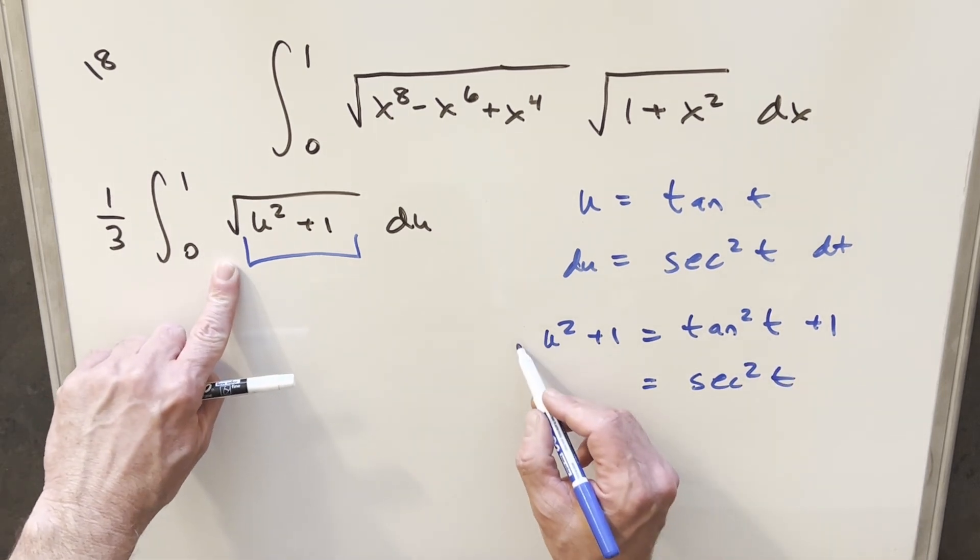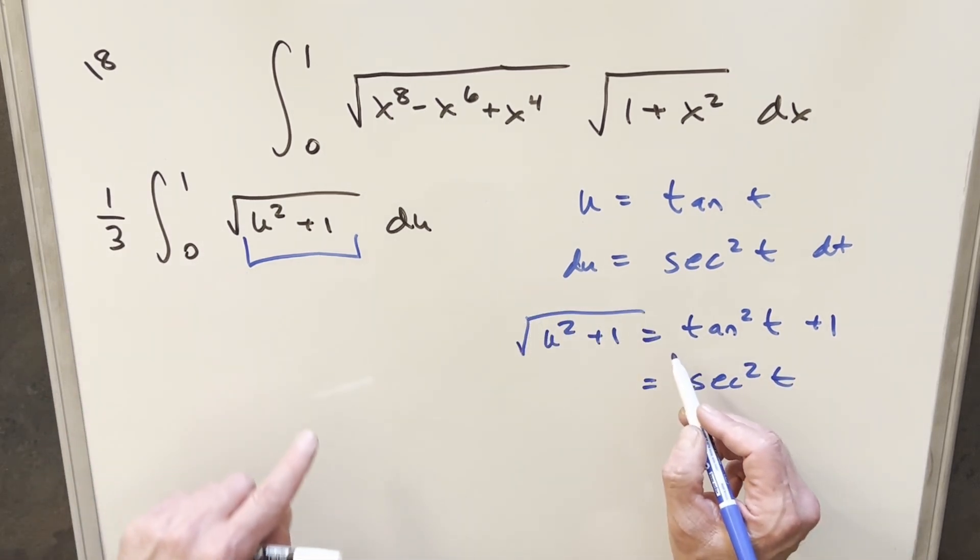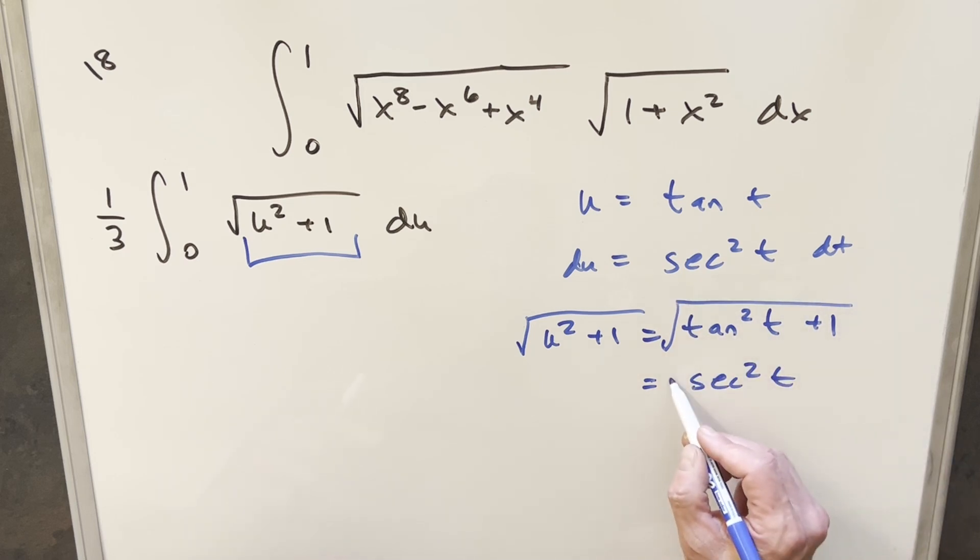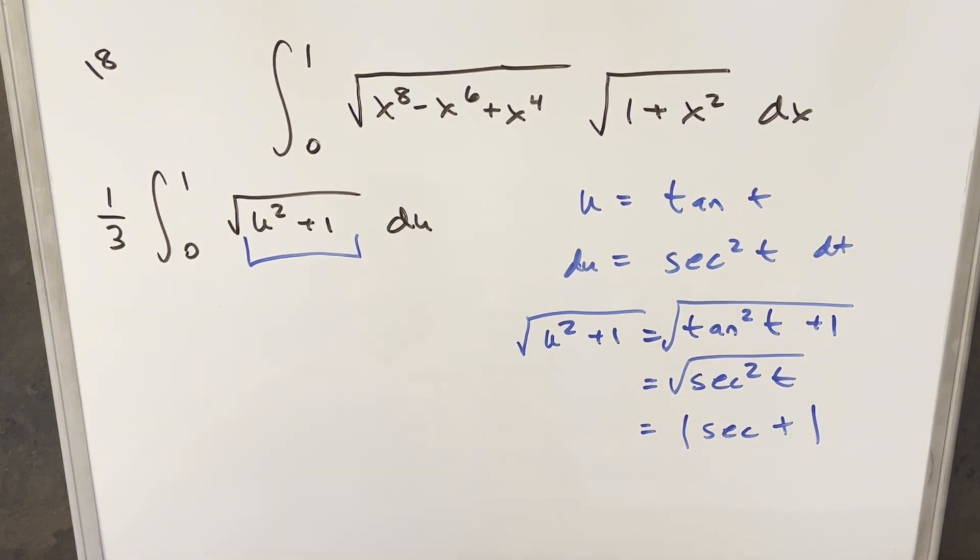But now actually, let's just include the radical in this. So let's get our value for the square root of u squared plus 1. So take the square root everywhere, square root of everywhere. The square root of secant squared t is actually going to be absolute value of secant of t. And I'll leave that for now.